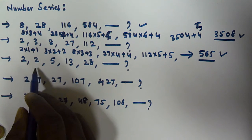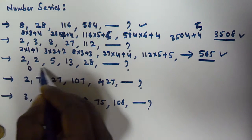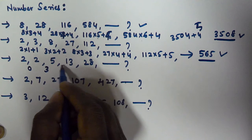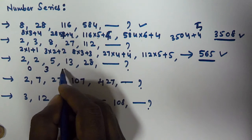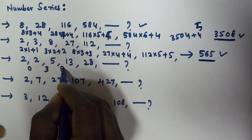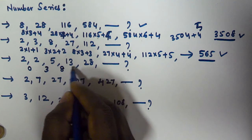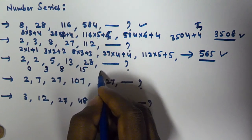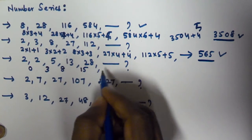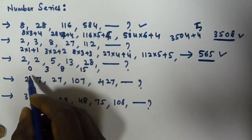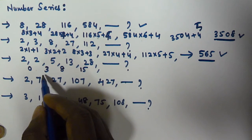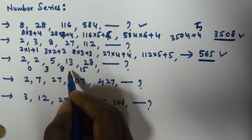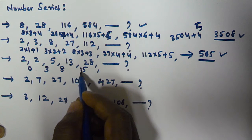For the third series 2, 2, 5, 13, 28, let's look at the differences. The difference between terms is 0, then 3, then 8, then 15. The differences follow the pattern 0, 3, 8, 15.